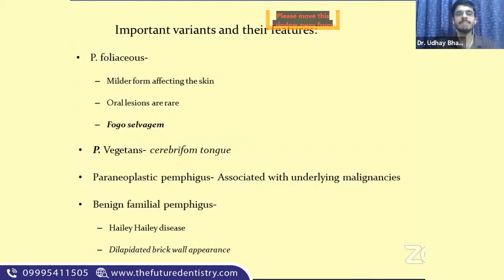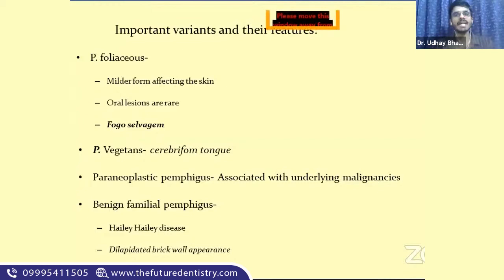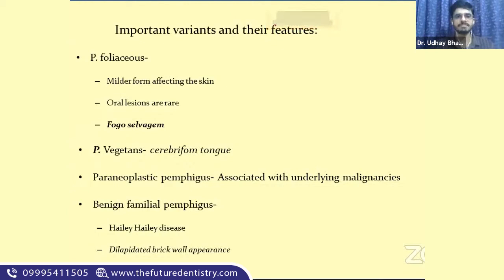Paraneoplastic pemphigus is a type of pemphigus that coexists with an underlying malignancy. 'Para' means alongside, 'neoplastic' means neoplasm. The unique histological feature of paraneoplastic pemphigus is that blisters are both intraepithelial and subepithelial — meaning split occurs above and sometimes below the basal lamina. This distinguishes it from other types of pemphigus.